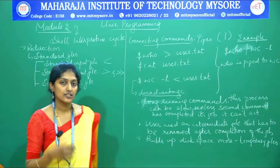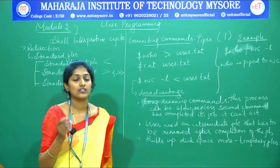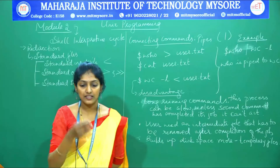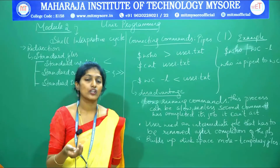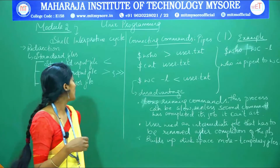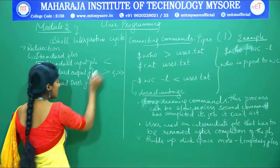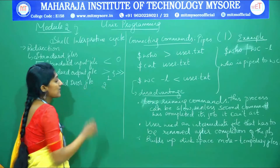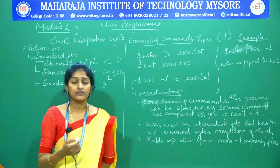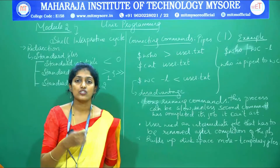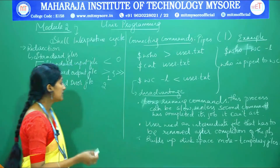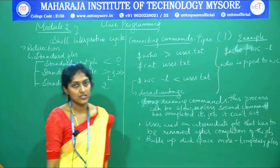The standard error file displays error messages for a particular file provided as an argument to a command. All three standard files use file descriptor numbers: zero for standard input, one for standard output, and two for standard error. By prefixing these descriptor numbers to a redirection symbol, you can identify from which file an error originates — whether during input reading, output display, or otherwise.